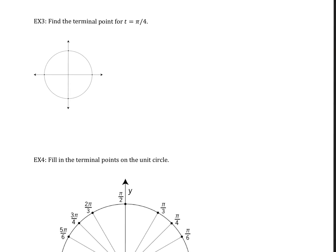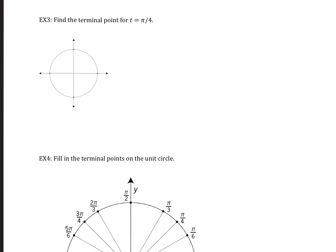Now let's take a look at example 3: find the terminal point for t = π/4. First, we want to figure out where π/4 would be. We know we have π/2 here, and π/4 is actually half of π/2 — because if we multiply π/2 by a half, we'll end up with a fourth. So it's directly in the middle — right here, π/4. The next thing we need to do is find the x and y coordinates.